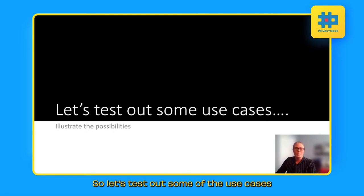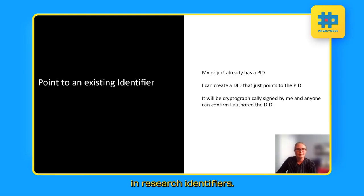So let's test out some of the use cases and illustrate the possibilities in research identifiers. One of the first things we're going to ask about is interoperability with existing systems. So we can use this decentralized identifier to point to an existing identifier. So my object already has a PID in this example. It's got, say, a DOI for paper or something. So I can create a DID that just resolves to the PID. And it will be cryptographically signed by me so that anyone can confirm that I was the person who authored and controls that.